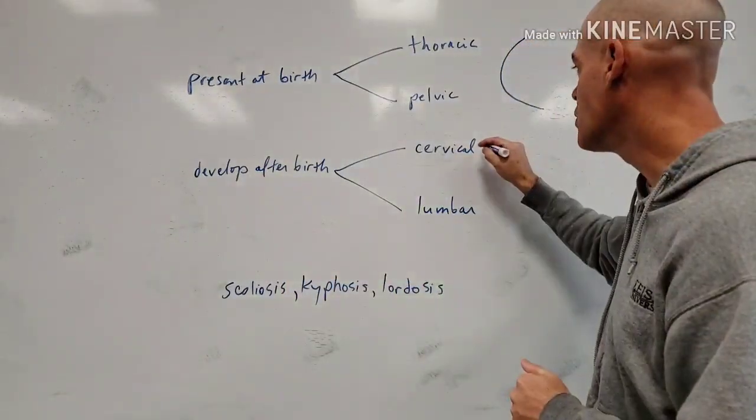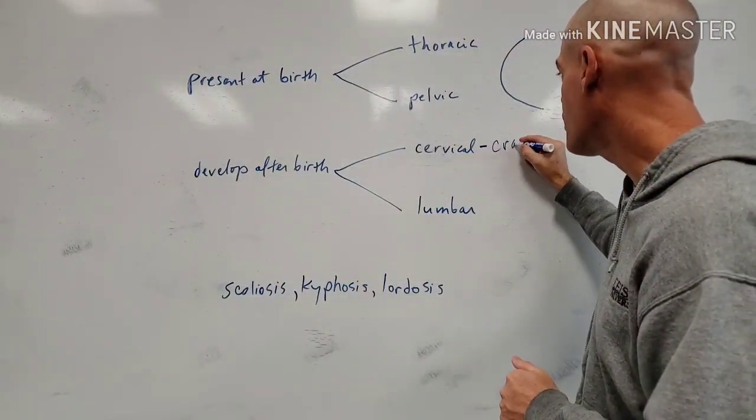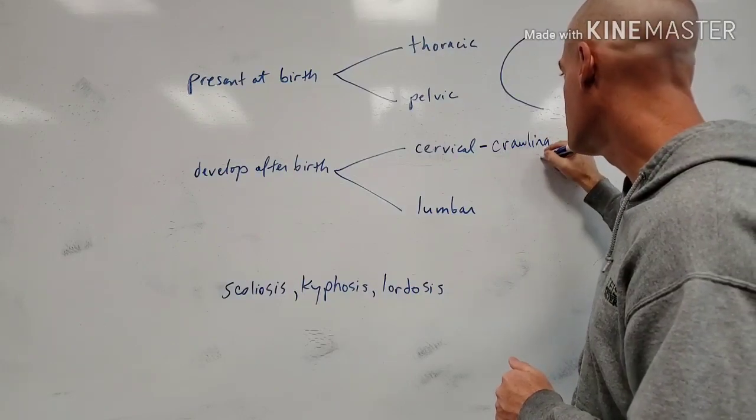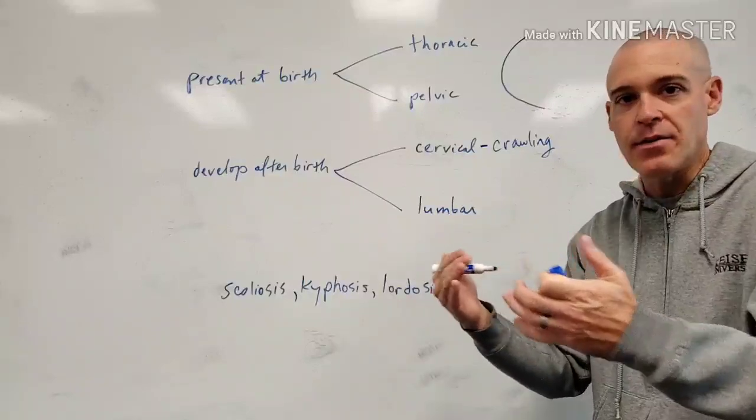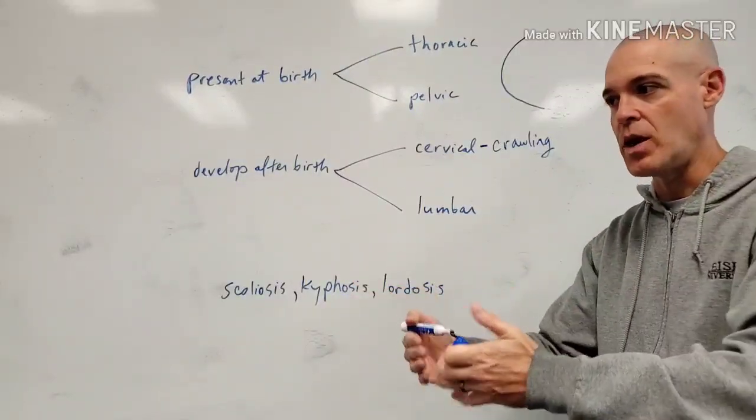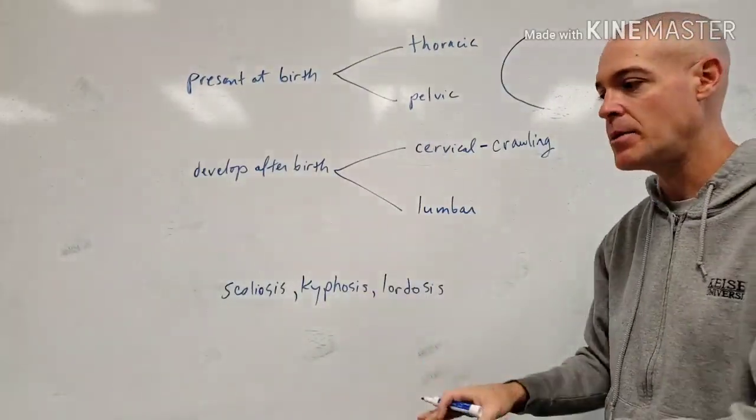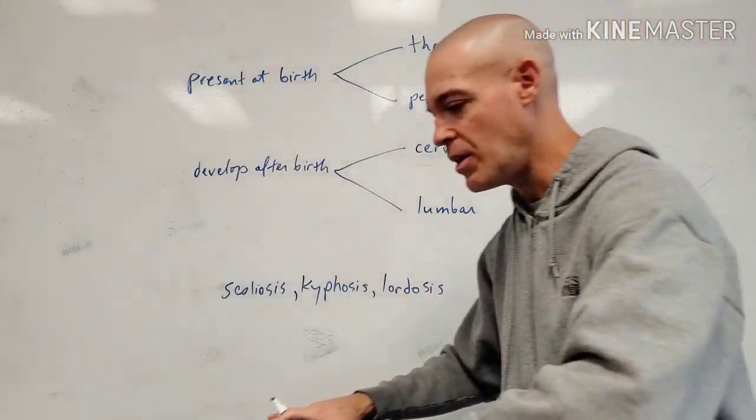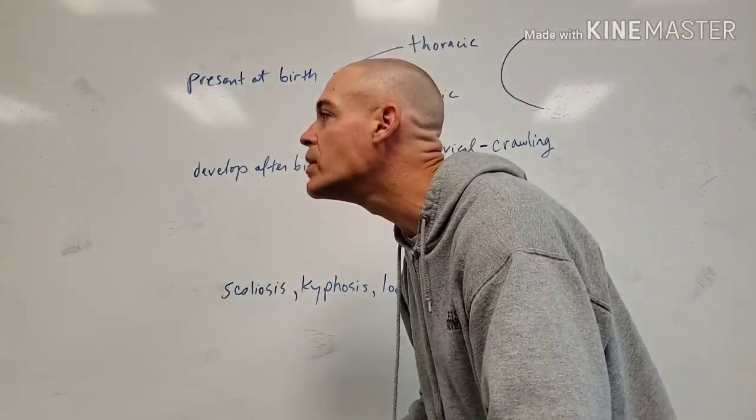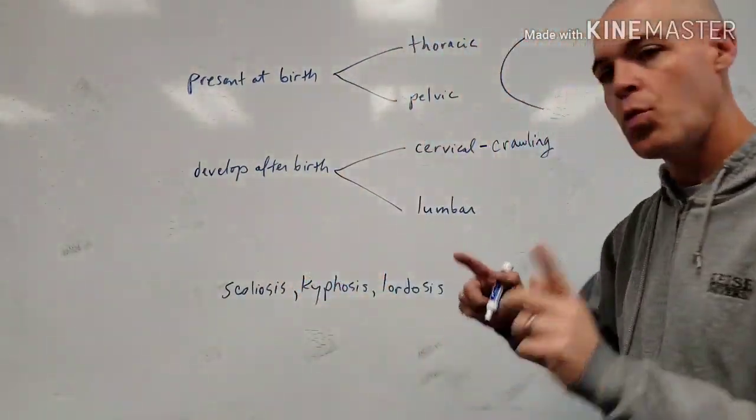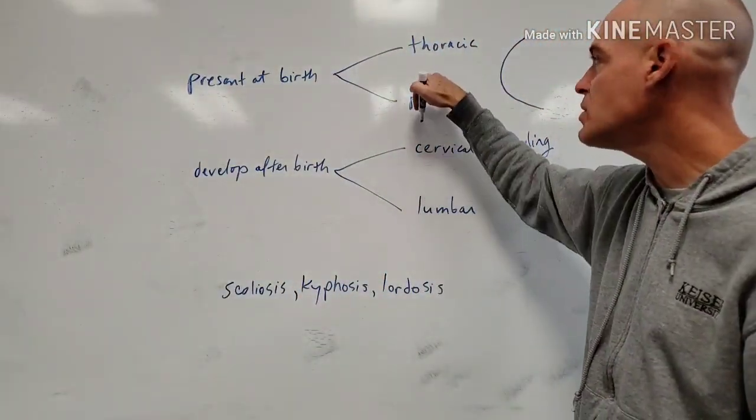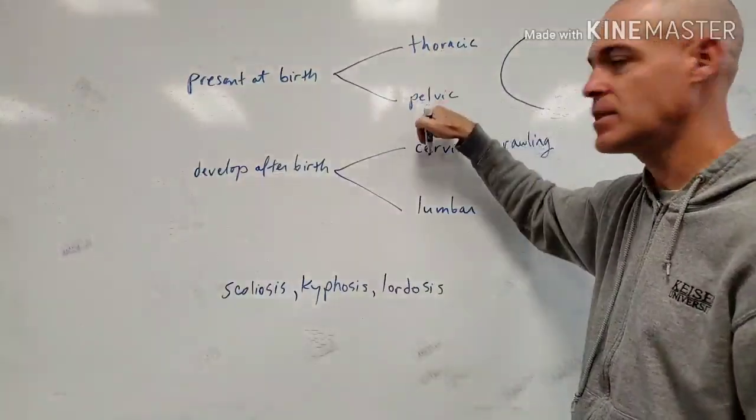The cervical curve is going to develop with crawling. As the baby starts to crawl, slightly different with different children as far as what time frame that's going to happen. But as the baby starts to crawl, of course, the baby is on its hands and its knees, so it's got to hold its head up. That develops the cervical curve. Which you'll notice this curve is opposite direction, if you think about it, of the thoracic pelvic.